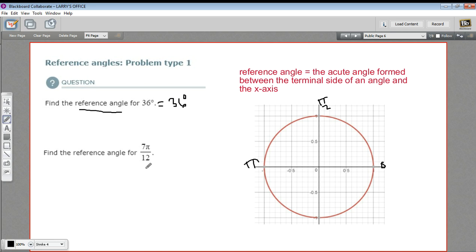Well 7 pi over 12, that's less than pi because that would be 12 pi over 12. It's greater than pi over 2 because pi over 2 would be 6 pi over 12. So it's going to be just beyond pi over 2. So I'm going to draw it in like this. So there is 7 pi over 12. Now what's the reference angle?